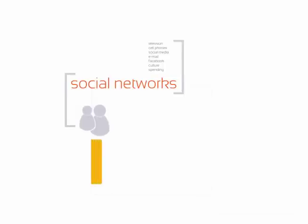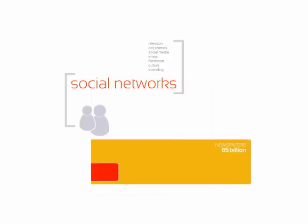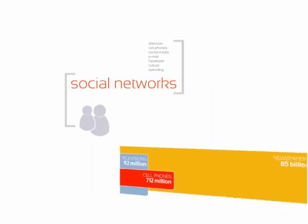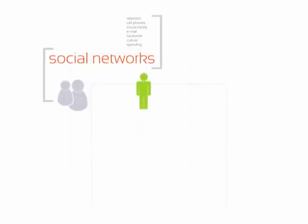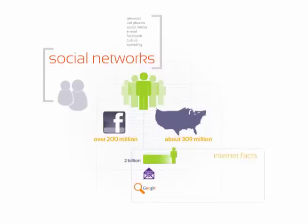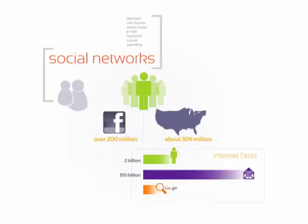Social networks: with so many people, we try to connect to each other in various ways. Each year we read over 85.4 billion newspapers, own over 92 million televisions, and use over 712 million cell phones. We connect online and form communities — Facebook alone has over 200 million users, that's almost the entire US population of 309 million. Currently there are almost 2 billion people that use the internet. We send over 150 billion emails a day — if each email equaled a mile, you could circle the earth over 18 million times. We google over 1.5 billion times a day — if those searches equaled seconds, you would travel five times the speed of light.